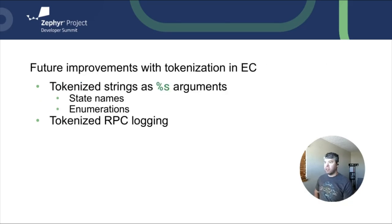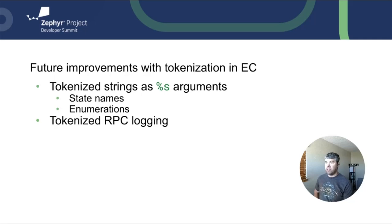A few other areas where we're planning to leverage tokenization in EC are tokenizing some of our static strings, such as state names to help capture state transitions, and enumerations so I can ditch my magic decoder ring. We're also looking to tokenize RPC logging to further offload logging processing to another thread or device.